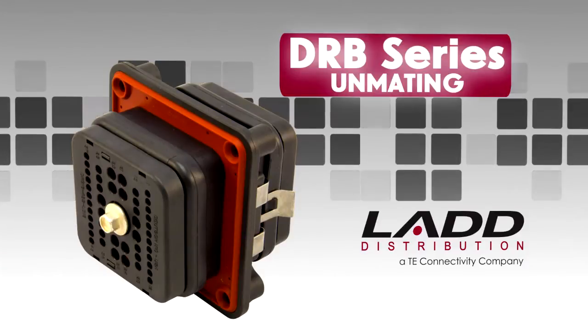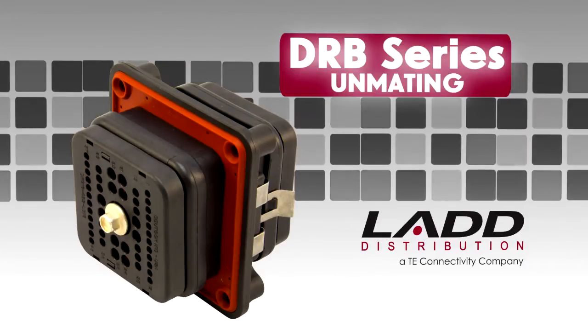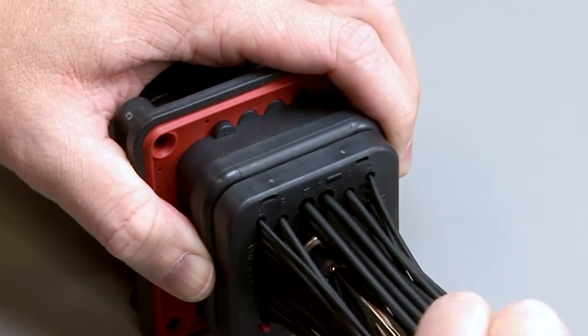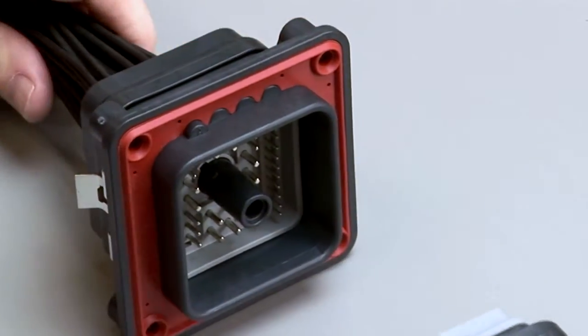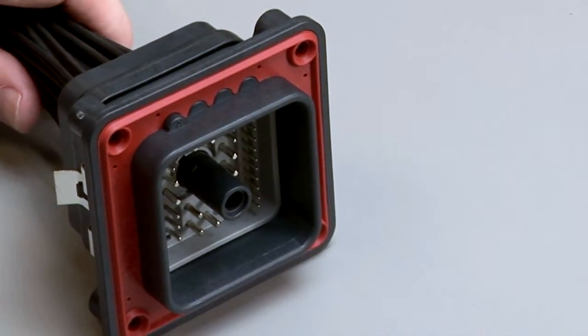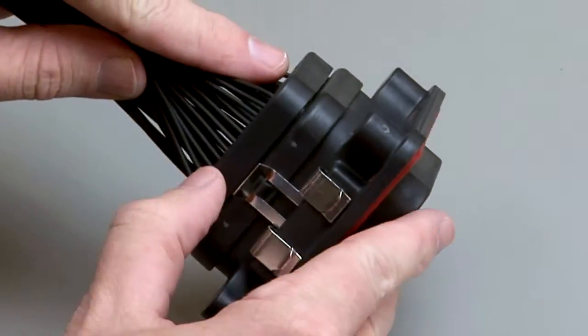DRB unmating. To unmate DRB series connectors, loosen the jack screw and pull the plug and mounting flange assembly apart. Remove the receptacle from the flange by releasing the retaining clips.